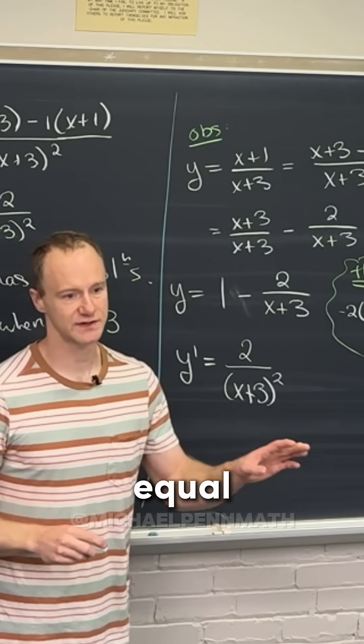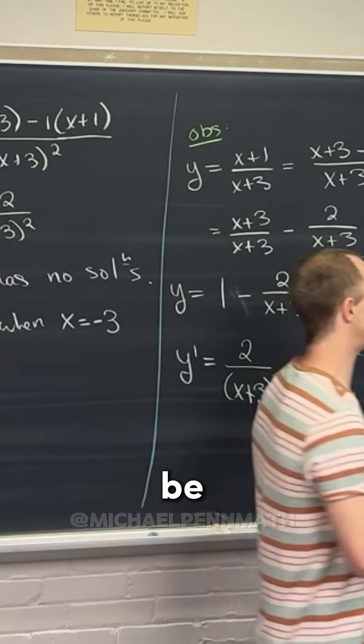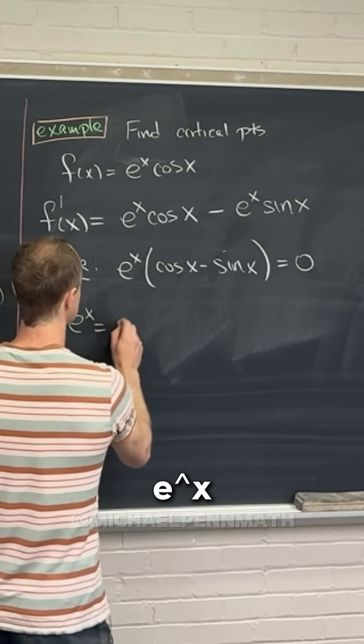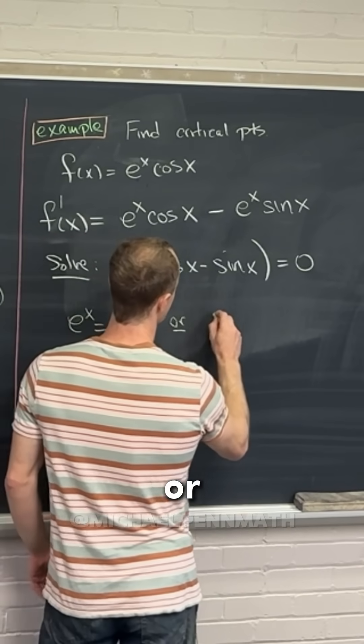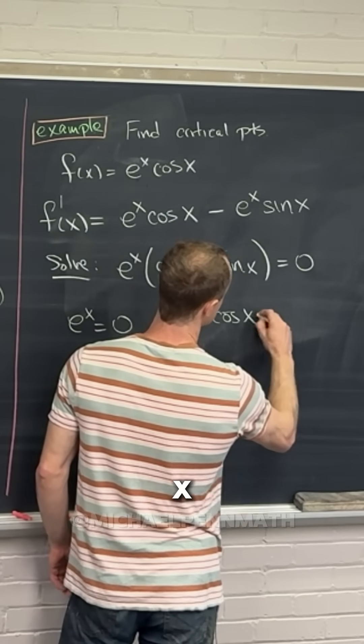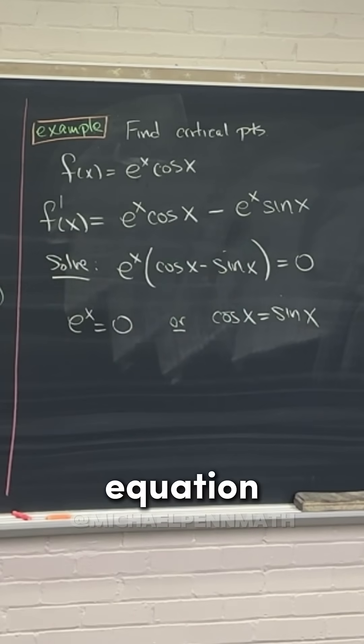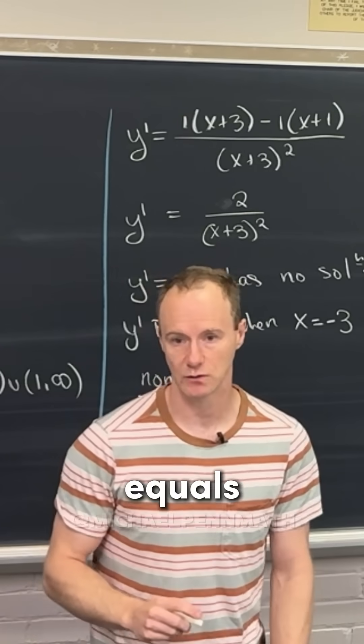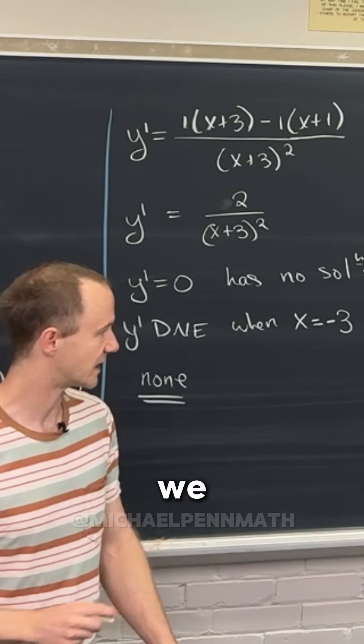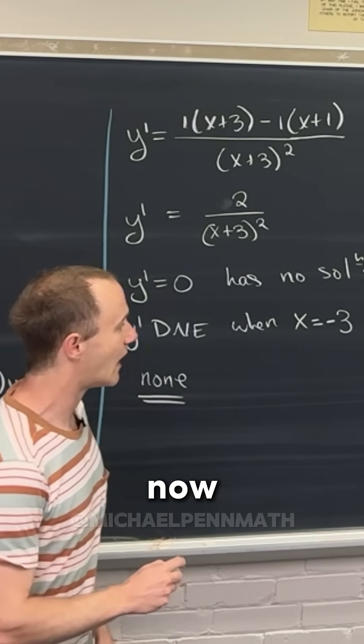Now we've got a product of two functions equals zero. That means one of them has to be equal to zero, which means we have e to the x equals zero, or we have cos x equals sine x. I'll just go ahead and move that over to the other side of the equation. It's really cos minus sine equals zero, but adding the sine over we get cos equals sine.